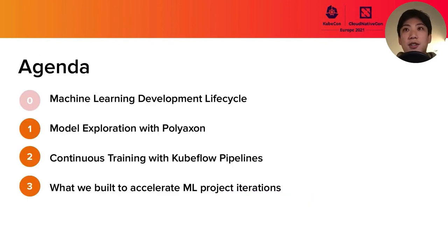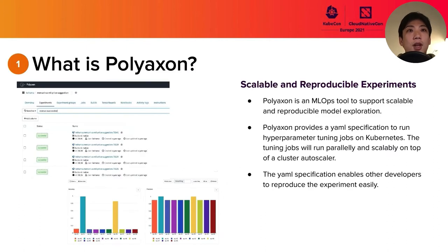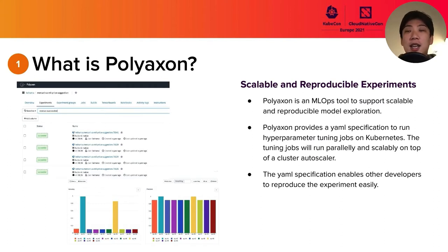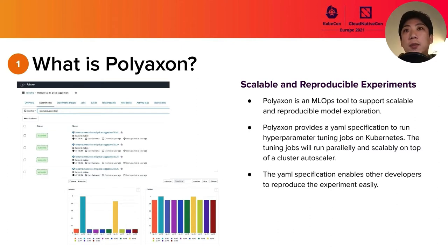Let's move on to the PolyAxon section. PolyAxon is an ML Ops tool to support scalable and reproducible model exploration. PolyAxon has a YAML specification called the PolyAxon file. In the PolyAxon file, we can define the steps to build a Docker image for training, define the commands to run model training, and define what parameters we will explore as a hyperparameter training job.